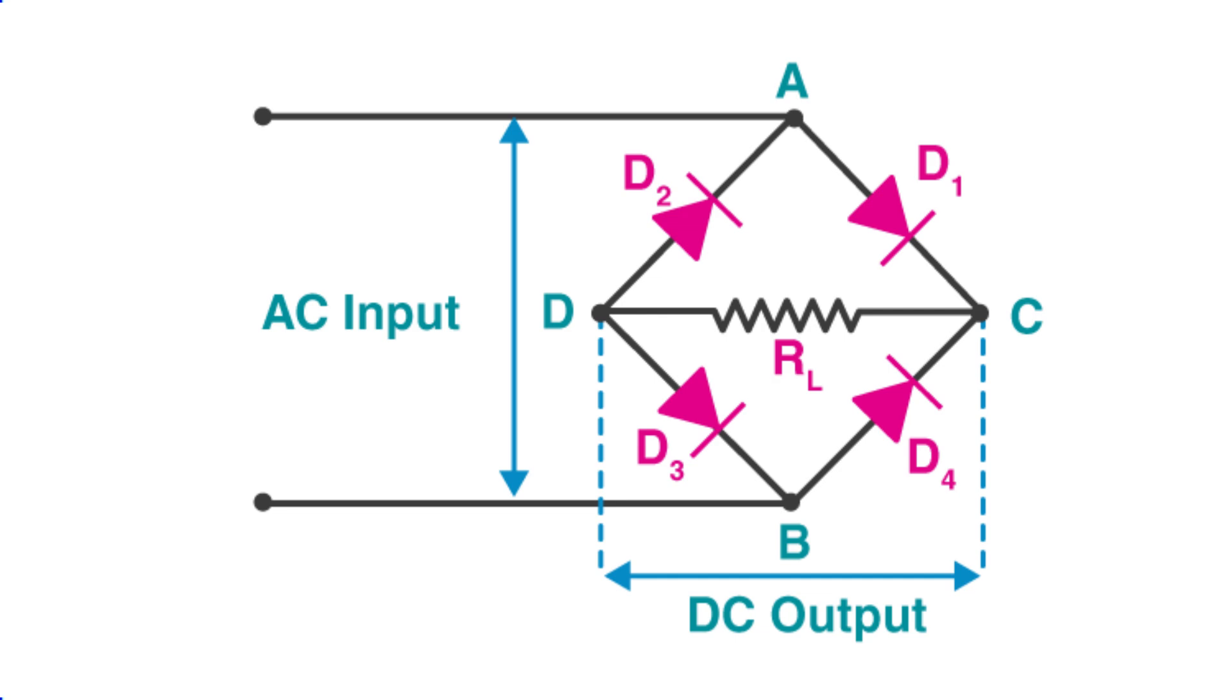To provide a practical illustration, imagine a bridge rectifier composed of four diodes. The input is supplied across two terminals A and B, while the output, the transformed DC current, is collected across a load resistor connected between C and D.